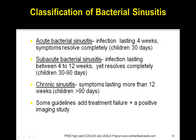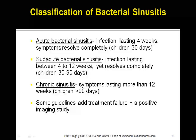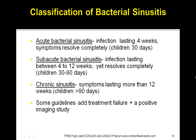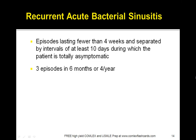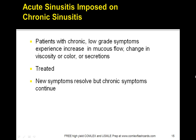For bacterial sinusitis: acute bacterial sinusitis lasts up to 4 weeks; sub-acute lasts 4 to 12 weeks; and chronic lasts greater than 12 weeks. Recurrent acute bacterial sinusitis consists of episodes lasting fewer than 4 weeks, separated by intervals of at least 10 days during which the patient is totally asymptomatic. Three episodes in 6 months is also a common marker for diagnosing recurrent acute bacterial sinusitis.